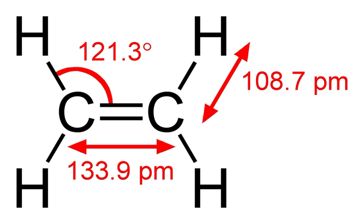Polyethylene consumes more than half of the world's ethylene supply. Polyethylene, also called polyethene, is the world's most widely used plastic. It is primarily used to make films in packaging, carrier bags, and trash liners.